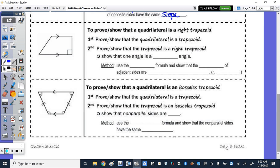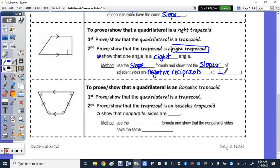Again, just to show that only one pair of opposite sides are parallel. Now, how do we go from a trapezoid to a right trapezoid? Well, first we do prove that the quadrilateral is a trapezoid. And then we're going to show it's a right trapezoid by showing that one angle is a right angle. This again, we use the slope formula and show that the slopes of adjacent sides are negative reciprocals. Remember, perpendicular lines give us that right angle.